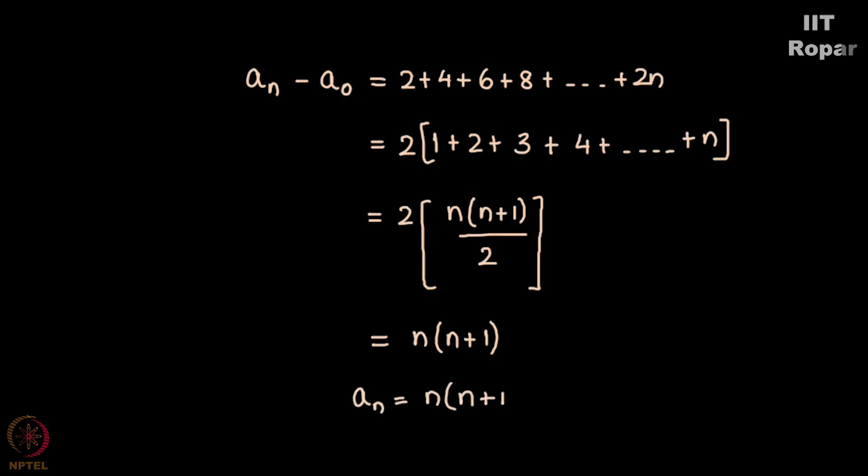Now this is the closed form for the sequence. Did you observe that? We first found out the recurrence relation for the sequence and now we found the closed form. Representing An in terms of n becomes a closed form, which is also called the solution for the recurrence relation. So An = n(n+1) is the solution for the given recurrence relation.